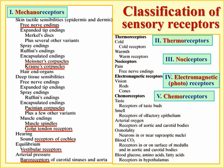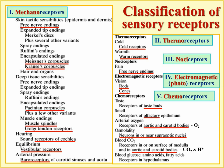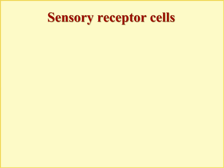Thermoreceptors are represented by just two types: cold and warm receptors. Nociceptors — pain receptors — are free nerve endings. Electromagnetic photoreceptors to be considered soon include rods and cones of the retina. A rather large group of chemoreceptors exists, including taste receptors, olfactory receptors, receptors of aortic and carotid bodies responding to oxygen, osmoreceptors, receptors responding to carbon dioxide and H+ ions, and receptors for nutrients.